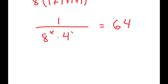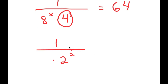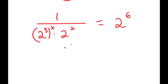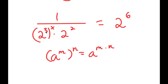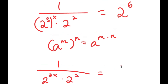Now from here, I'm going to rewrite all these terms as powers of 2. So 4 is equal to 2 squared. 8 is the same thing as 2 to the power of 3, so I have 2 to the power of 3 to the power of x. And 64 is the same thing as 2 to the power of 6. Now using the power rule, 2 to the power of 3 to the power of x equals 2 to the power of 3x. And I have this times 2 squared is equal to 2 to the power of 6.